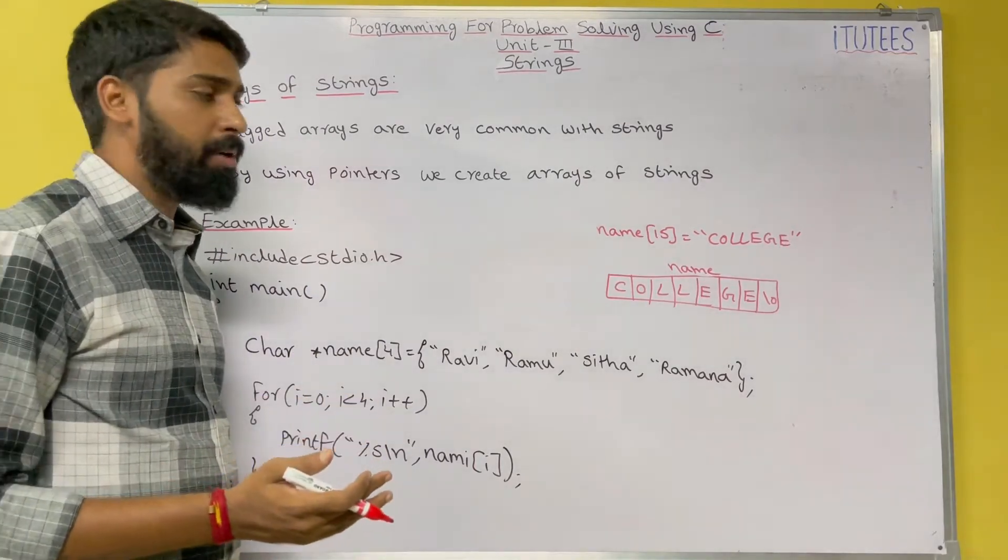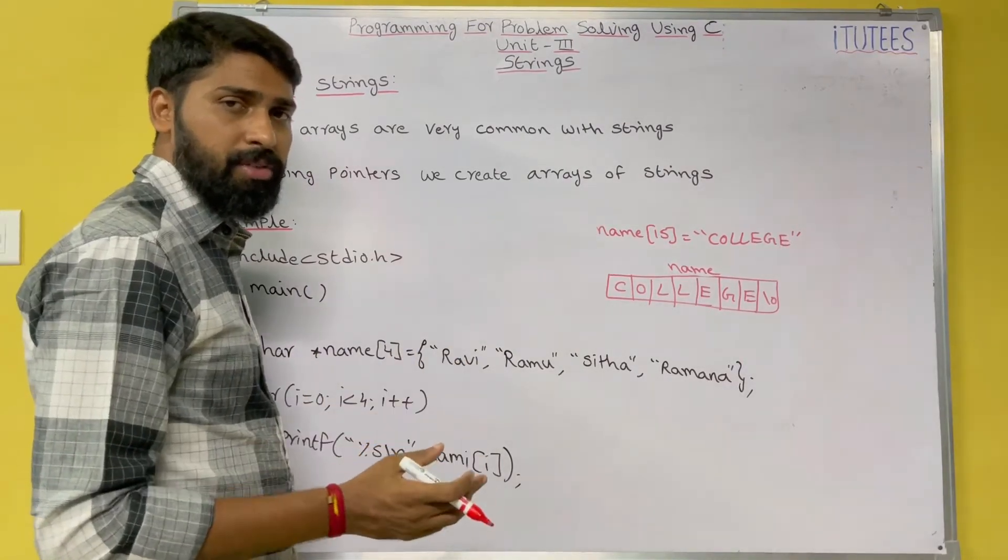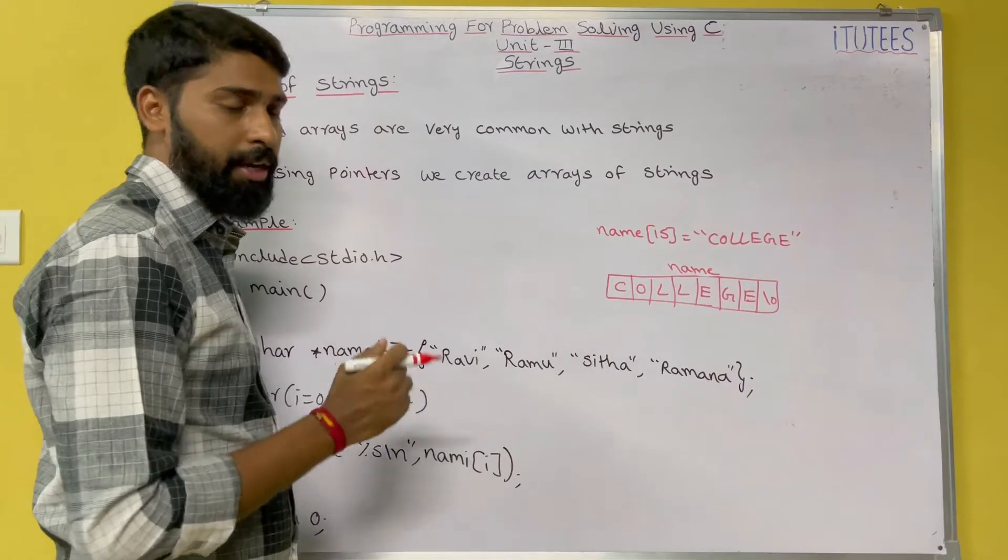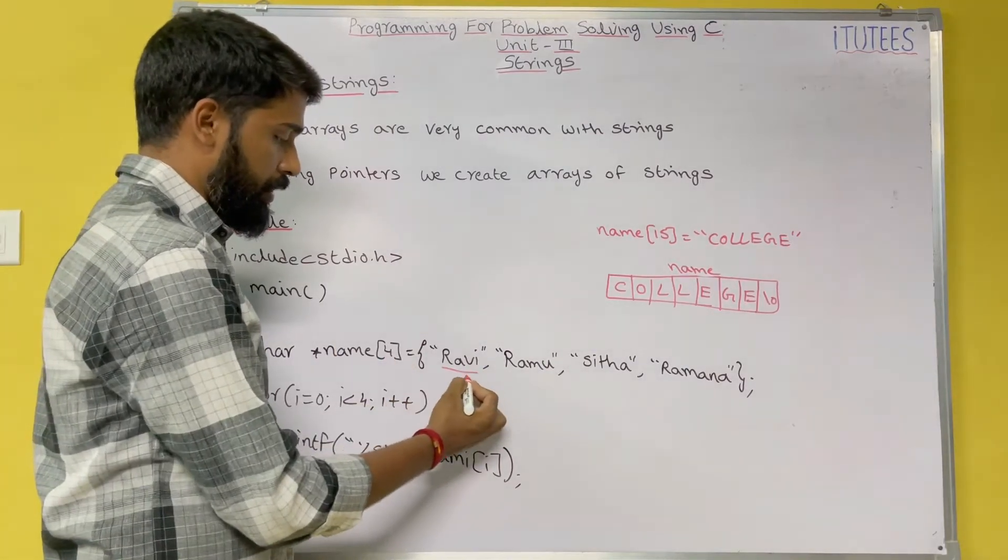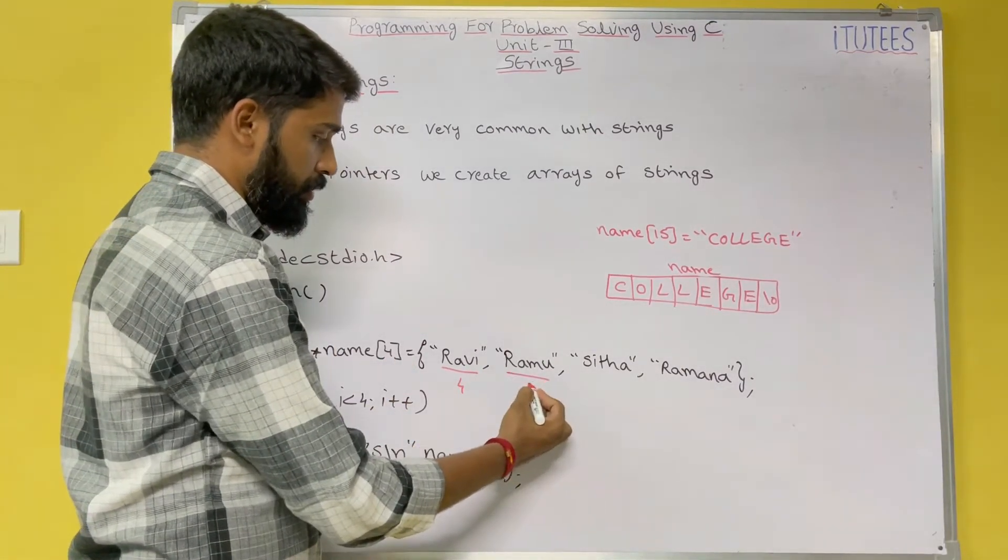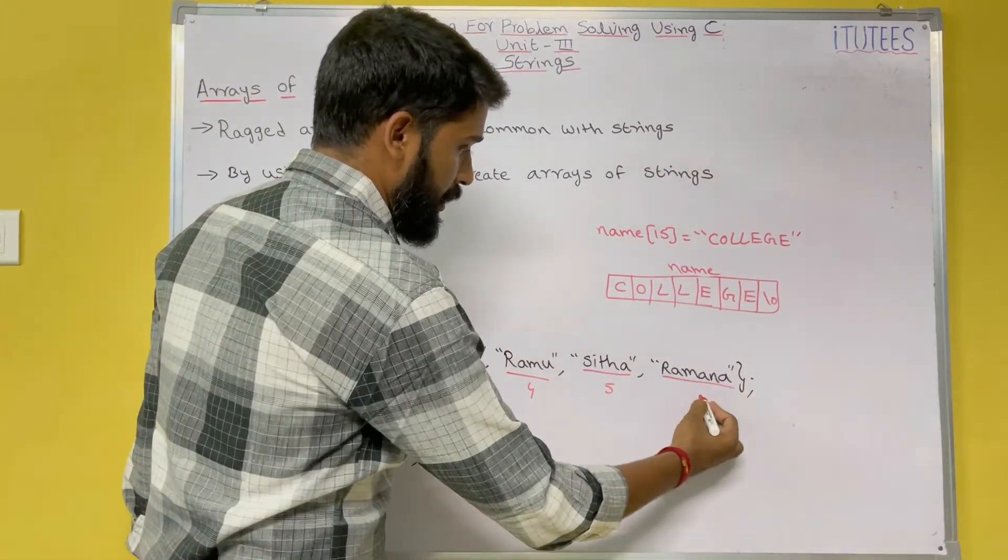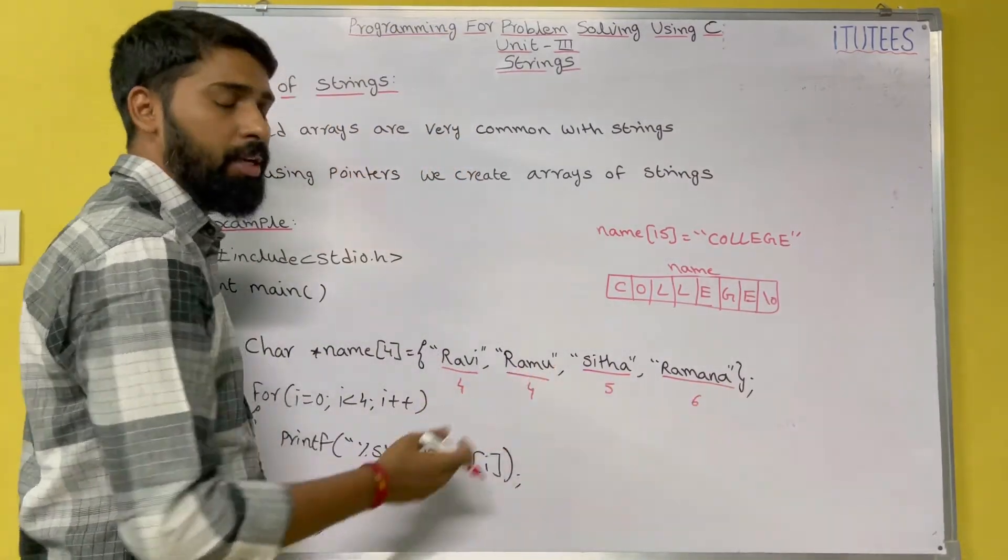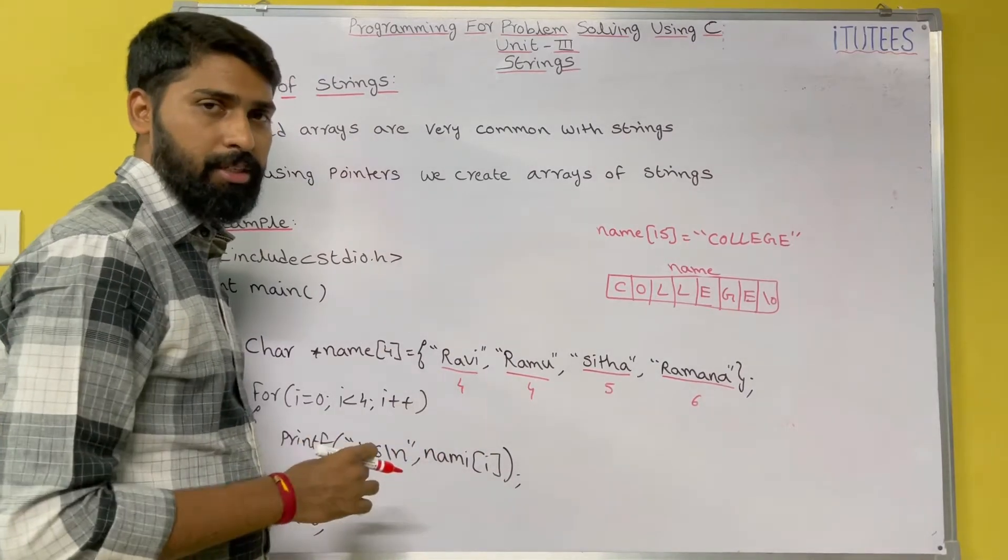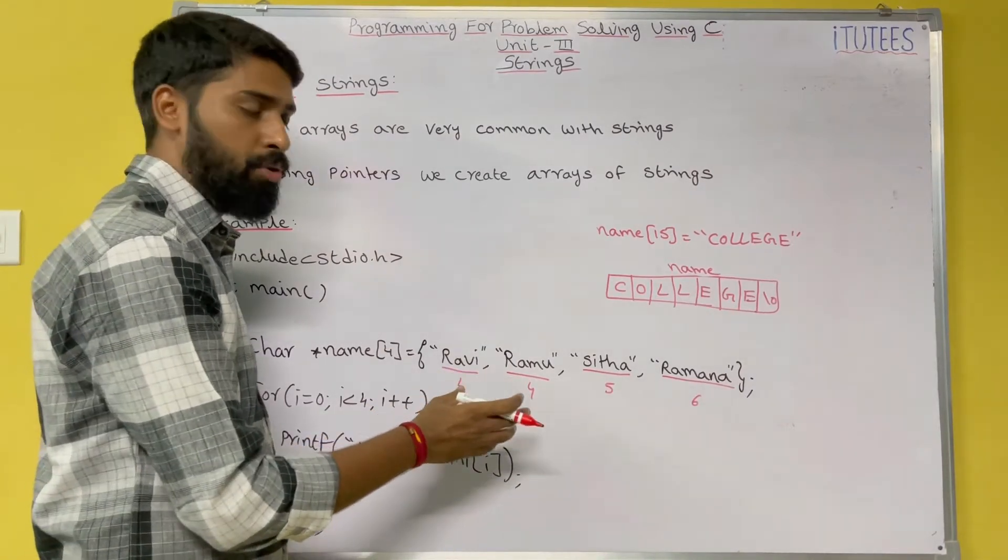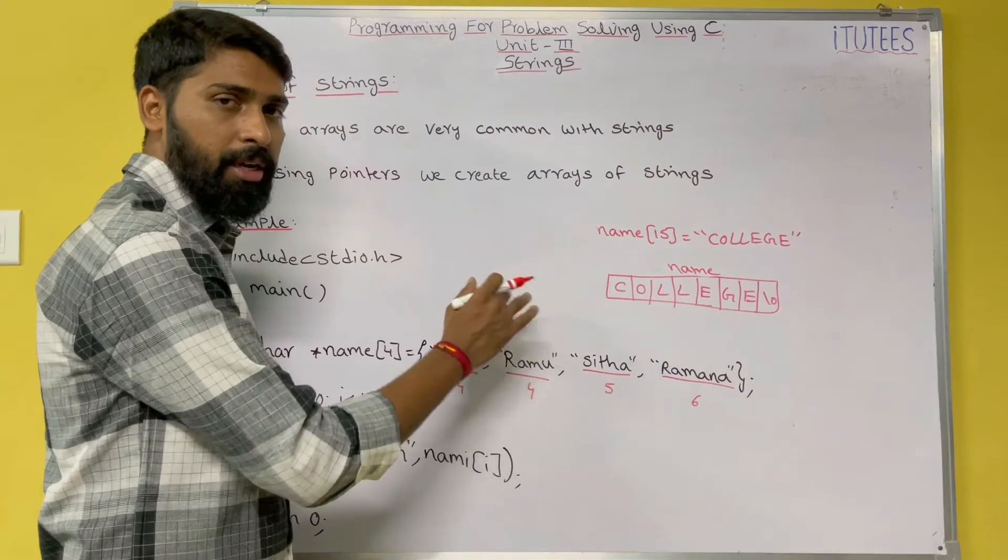Ranked arrays is nothing but different length strings you are going to store in array. For example here, Ravi, the size is 4. Ramu, the size is 4. Sita, 5. Ramana, 6. All these are different in size. Now we are going to store these strings in an array.